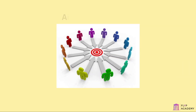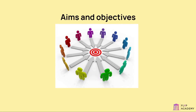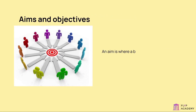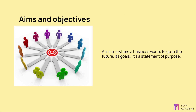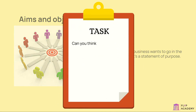Let's talk about aims and objectives. An aim is where a business wants to go in the future — its goals. It's a statement of purpose. Task: Can you think of three aims that a business might have? List them down.